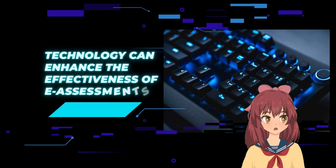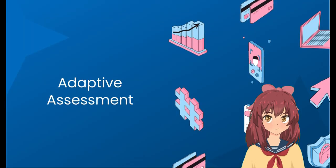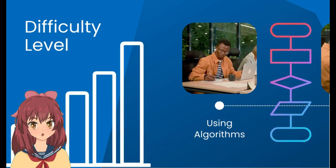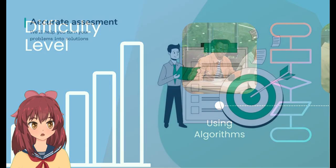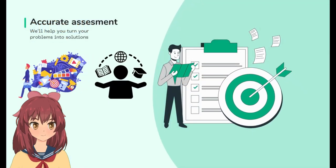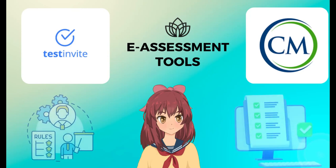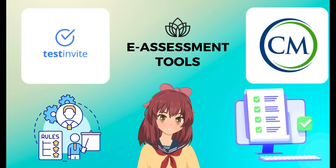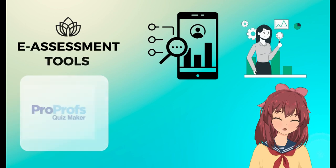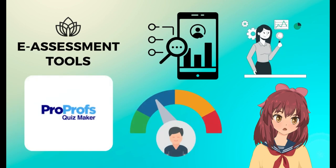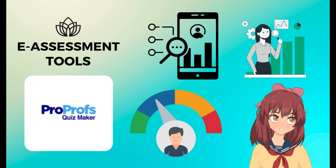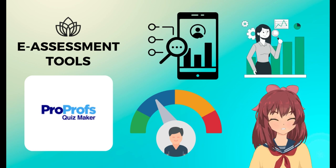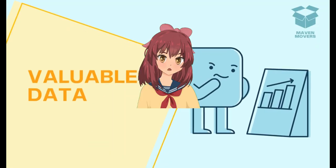Lastly, the use of technology can enhance the effectiveness of eAssessments. Adaptive assessments use algorithms to adjust the difficulty level of the assessment based on the learner's responses, allowing for more accurate assessment of the learner's knowledge and skills. eAssessment tools like TestInvite and ClassMarker offer adaptive assessment options, allowing for personalized assessments that better reflect the learner's abilities. Additionally, some eAssessment tools like ProProf's QuizMaker offer the ability to track and analyze learner performance, providing instructors and learners with valuable data on areas of strength and weakness.